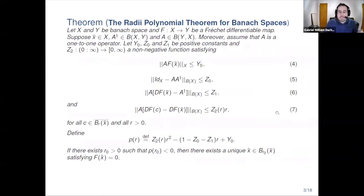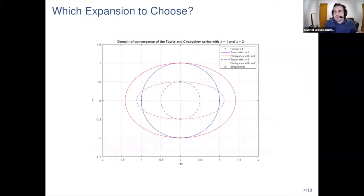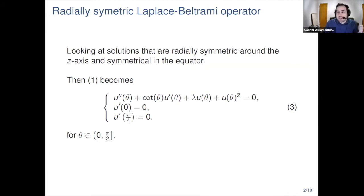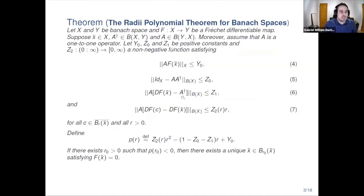The Banach space will be defined by the coefficients of some series expansion. The key question is: which series expansion to choose? Looking at our equation, there is a cotangent term that is not defined at zero. Previous work used Taylor series to solve the equation, which worked nicely because we can use the Taylor series to handle the discontinuity at zero. However, the problem with Taylor series is that it wasn't efficient enough — not many solutions could be proven using it.